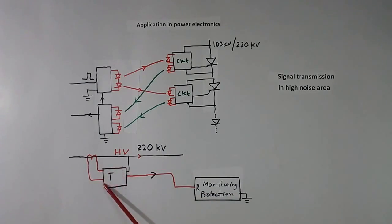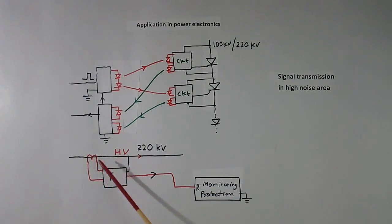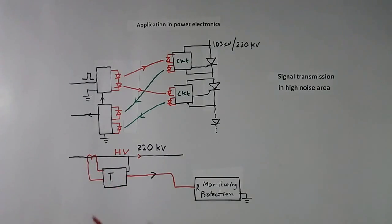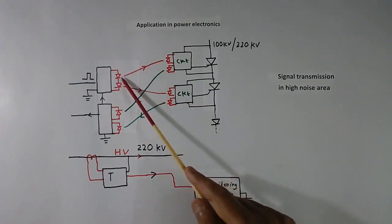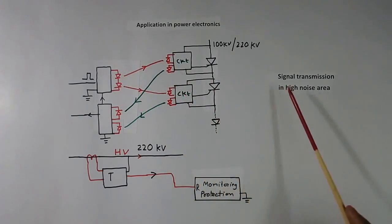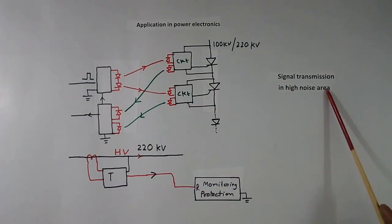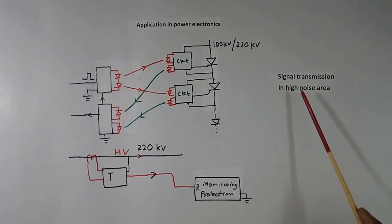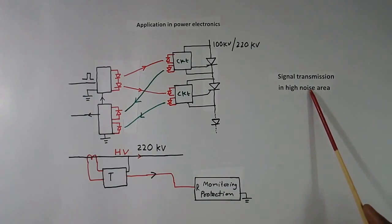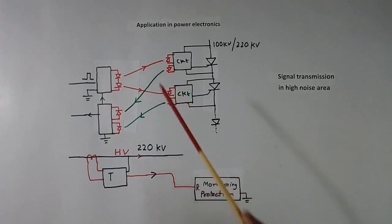This circuit board again draws power from the 220 KV line itself — no separate power is given. We also use optical cables in very high electrical noise areas. The distance may be less and high voltage may not be present, but because the electrical noise is high, we have to use optical cables.